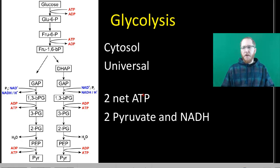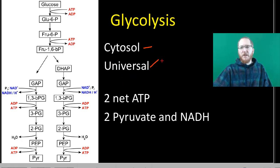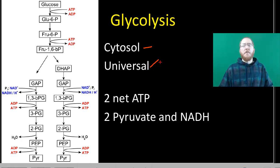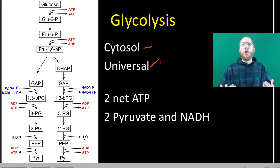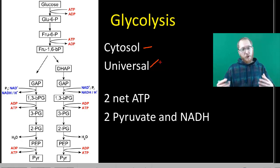Glycolysis occurs in the cytosol, or cytoplasm — I prefer cytosol. This is a fairly universal process that has been going on for a long time in organisms. Just about all organisms use this because most can break down glucose. It appears to have evolved early on and been passed on to nearly all organisms. It can also occur whether you're anaerobic or aerobic, so even organisms in environments without oxygen can still do glycolysis.